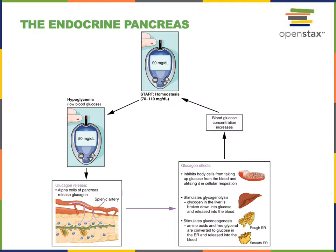In response to low blood glucose, which is known as hypoglycemia, alpha cells of the pancreas release glucagon. Glucagon binds to receptors on the surface of cells throughout the body, where it decreases the uptake of glucose from the blood and decreases the utilization of glucose in cellular respiration, inhibiting the metabolic pathways that use glucose. It also stimulates glycogenolysis, the process that breaks down glycogen — a carbohydrate that stores glucose — releasing glucose into the blood from the liver. Glucagon also stimulates gluconeogenesis, which is the synthesis of new glucose from amino acids and glycerol.